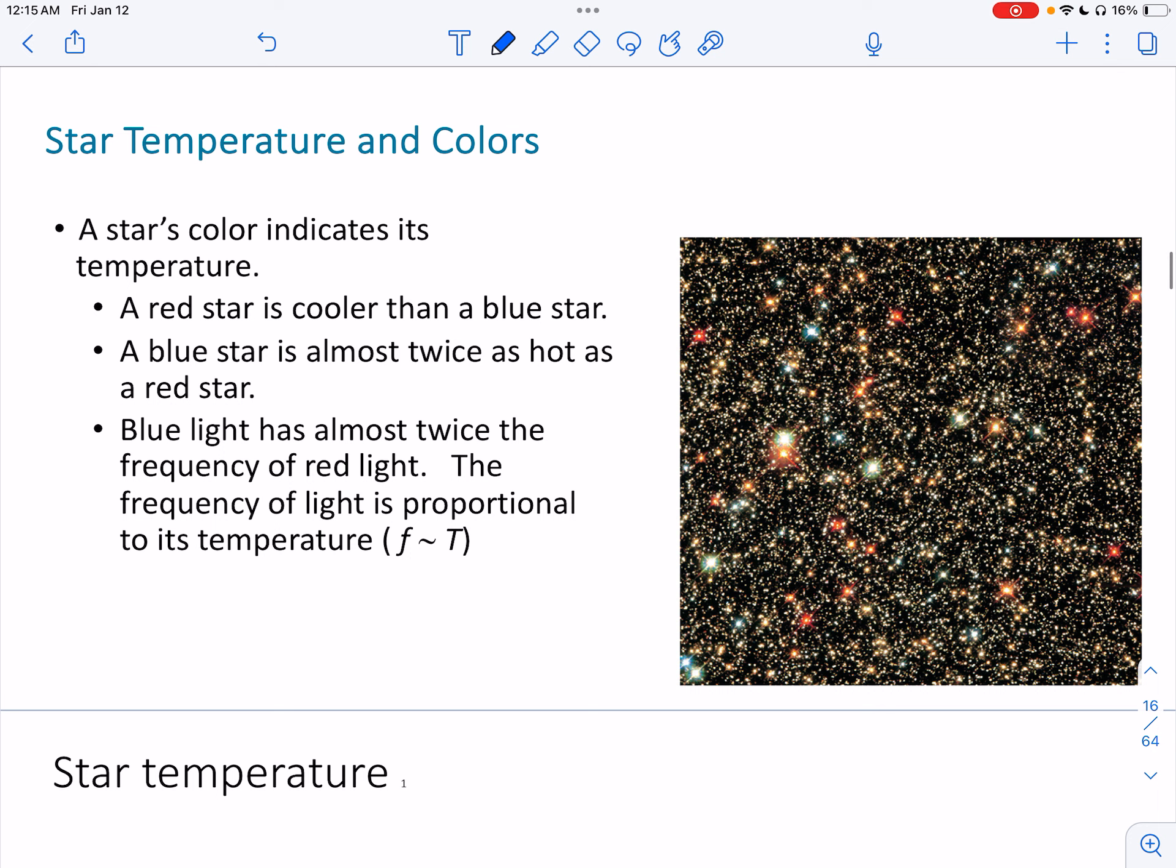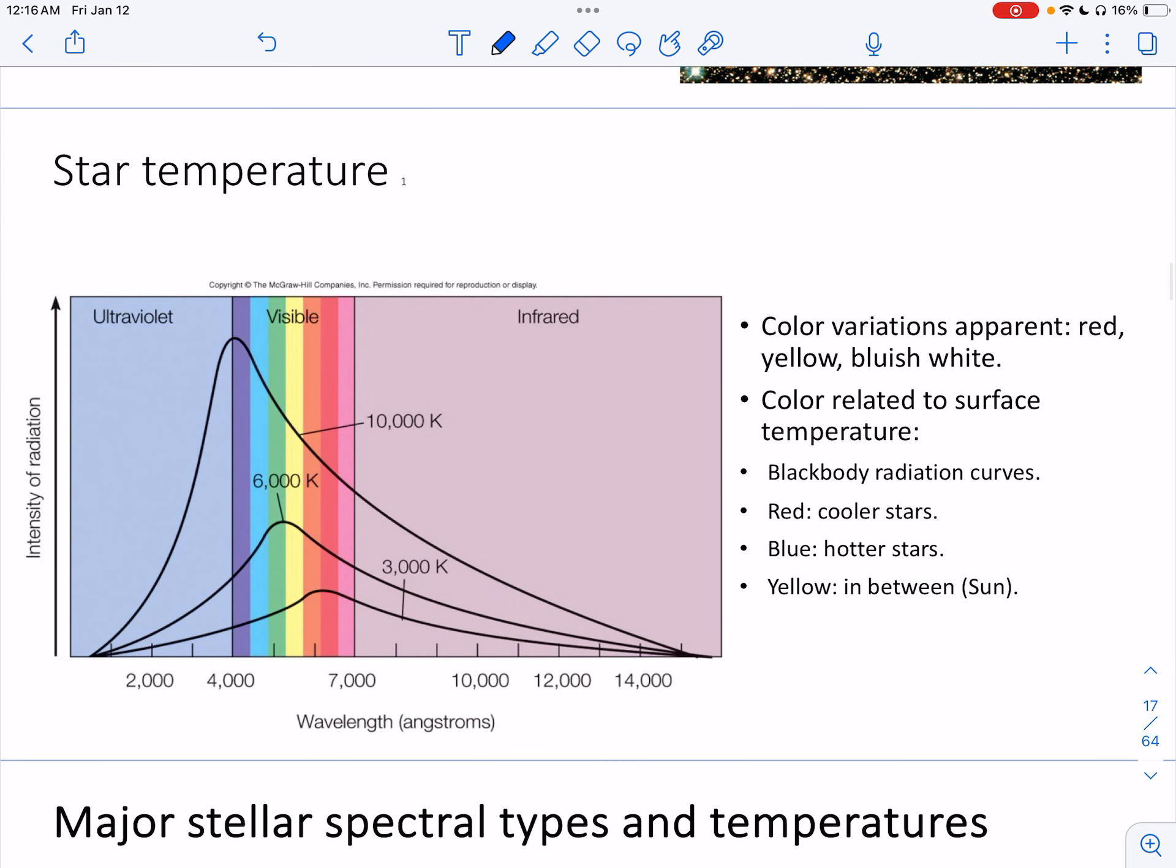Absolute magnitude is a more precise method for determining how bright a star really is. Because the problems with this scale before that I showed you here, that's called the apparent magnitude. A star at further distance appears fainter than ones that are closer. And that is a problem. So absolute magnitude is a more precise method. So we start looking at, with absolute magnitude, we start looking at star temperature and colors and a color indicates the star's temperature. A red star is going to be cooler than a blue star. So blue, like a blue flame is very hot. A blue star is almost twice as hot as a red star. And it has almost twice the frequency of the red light. So remember frequency is proportional to temperature.